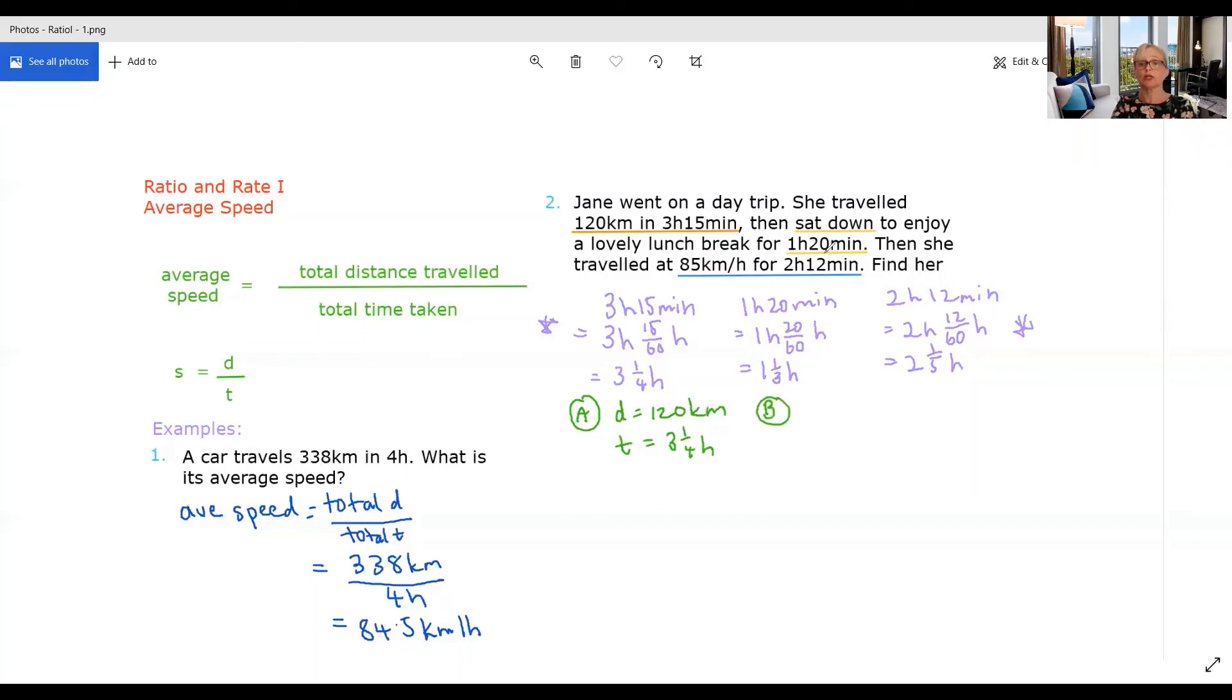All right, for the second part of her journey, she sat down to enjoy lunch. So how far did she go? Well, she went zero kilometres. How long did she take to do that zero kilometres? One and a third hours.